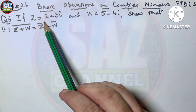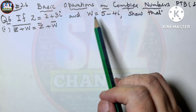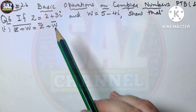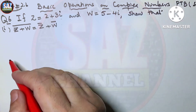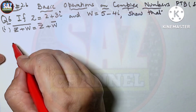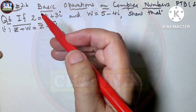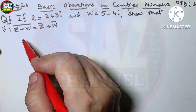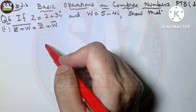Question 6, the first part: Z equals 2 plus 3 iota and W equals 5 minus 4 iota, and we have to prove Z plus W bar equals Z bar plus W bar. This is one of the important questions for your board examination, and I will be solving it in the way required by the board. The question has two sides — left hand side and right hand side — and I will take each side one by one to show that the two answers are the same.